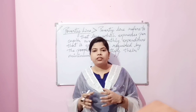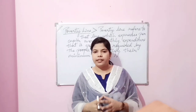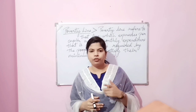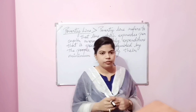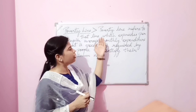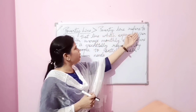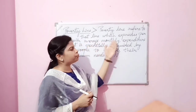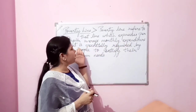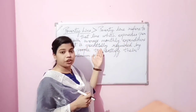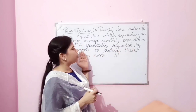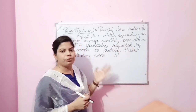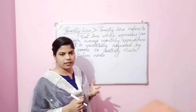On the basis of data provided by an assessor. Poverty line refers to that line which expresses per capita average monthly expenditure that is essentially required by the people to satisfy their minimum needs or minimum requirements — their necessities.